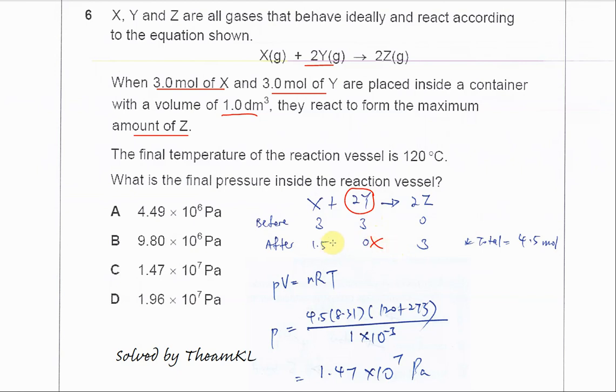X will remain at 1.5 moles because of the 1:2 ratio. Z will be three moles formed after the reaction because it has the same ratio as Y. So the total moles after reaction is 4.5 moles.